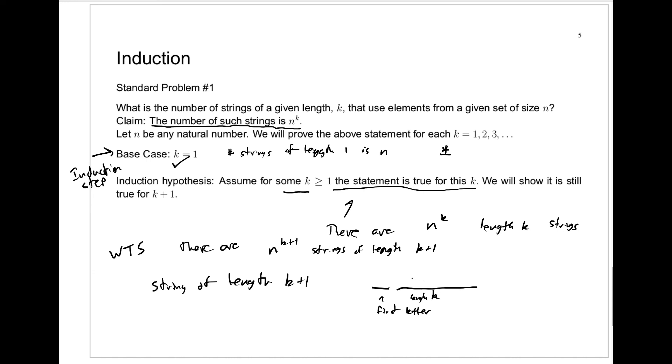Now, how many different strings are there of length k? Our induction hypothesis says there are n to the k such strings. We want to count strings now of length k plus 1. How are we going to do that?